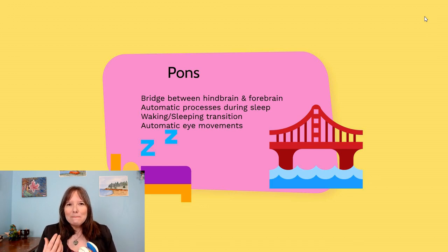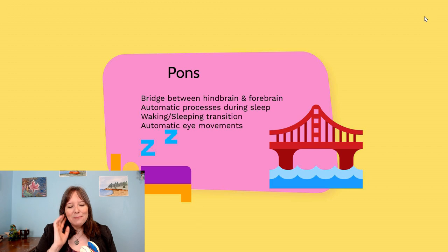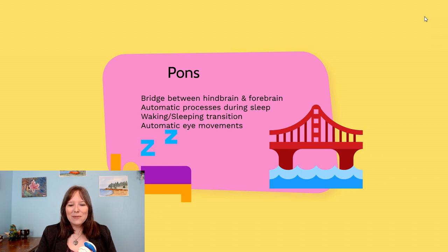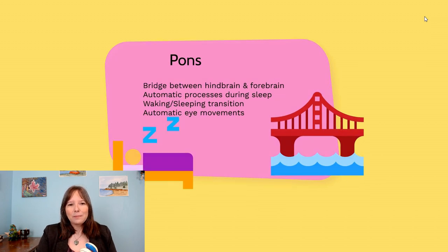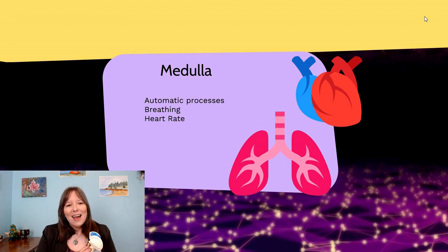Automatic eye movements also occur via the pons. We move our eyes constantly all day — sometimes these are conscious movements from the forebrain, but sometimes they are automatic. When we're reading, we're constantly moving our eyes around. We actually rarely experience tunnel vision, which we'll discuss in the next unit. The pons helps coordinate these involuntary movements.